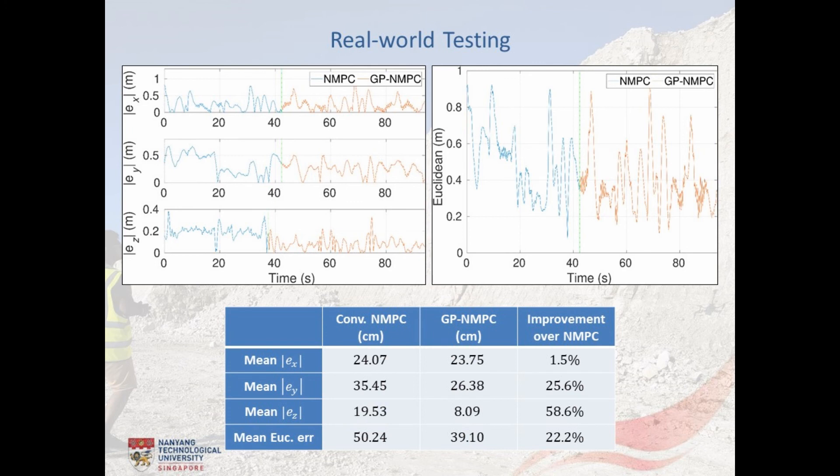Here are the absolute error and Euclidean error plots for both the controllers and their corresponding mean values are listed in the table. In summary, the GP-NMPC framework realizes the corresponding mean absolute error improvement of 2, 26 and 59% and the mean Euclidean error improvement of 22% over the conventional NMPC.